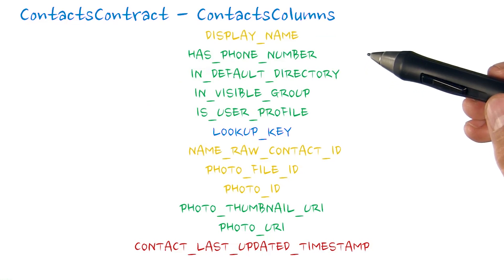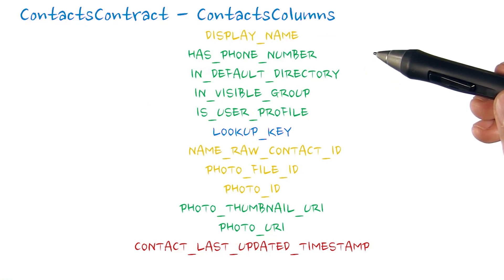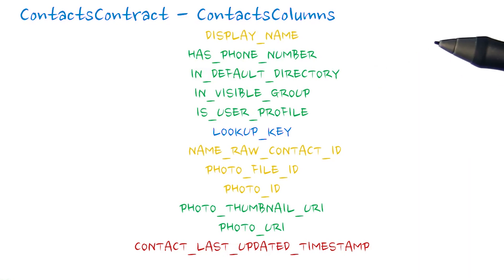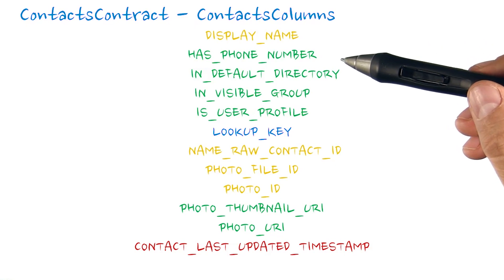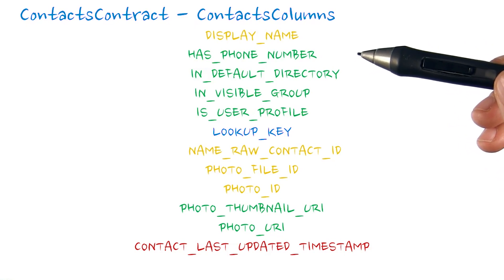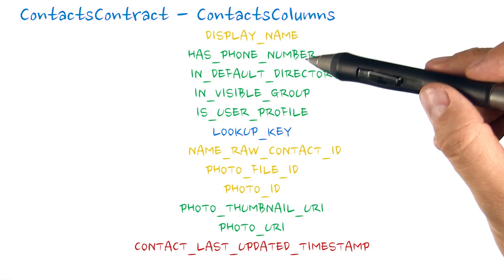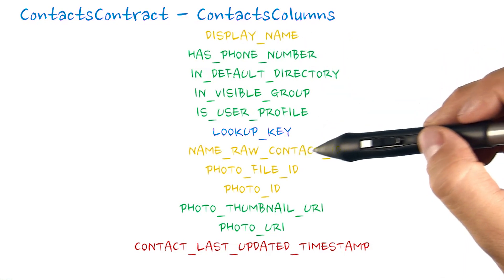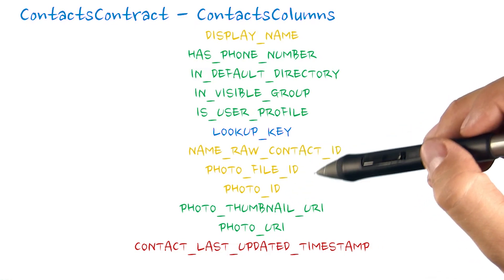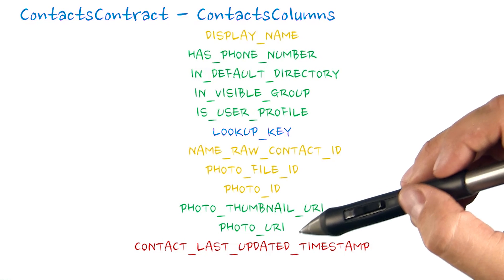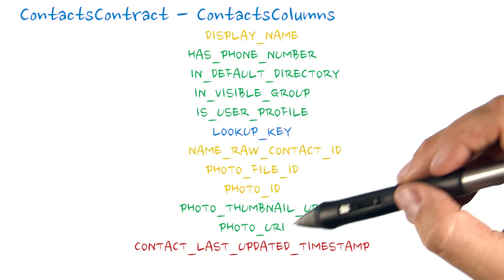If we search developer.android.com for the word contract, we see that there are many such contracts defined. In the contacts contract, for example, we can see that part of the contract contains a list of column names and we can have some sense of what the contact database looks like. It has a column for the display name, flags for the contact, columns for IDs that are used to link the contact to data in other tables, and columns for URIs that point to images associated with the contact.